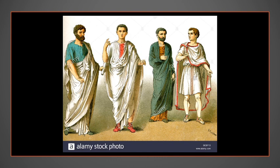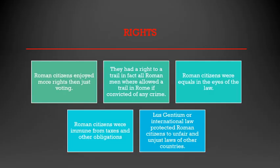Being a Roman citizen meant wearing a toga — more common togas were white, but a toga with a red stripe meant you were very important. Roman citizens had the right to a trial, and they had to be charged within 24 hours of arrest. All Roman men were allowed a trial in Rome; if convicted of a crime they could have their trial moved to the city of Rome. Roman citizens were all equal in the eyes of the law — they couldn't be tortured or beaten without a trial.